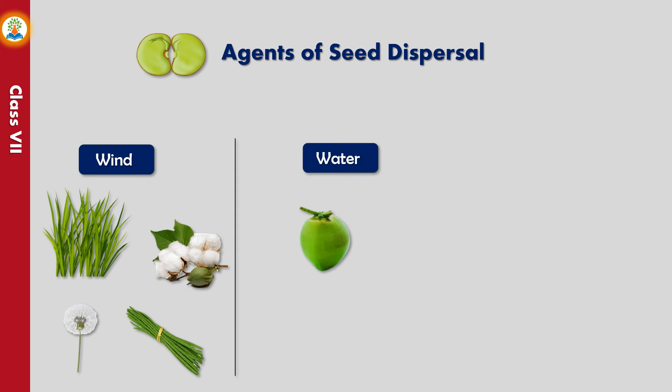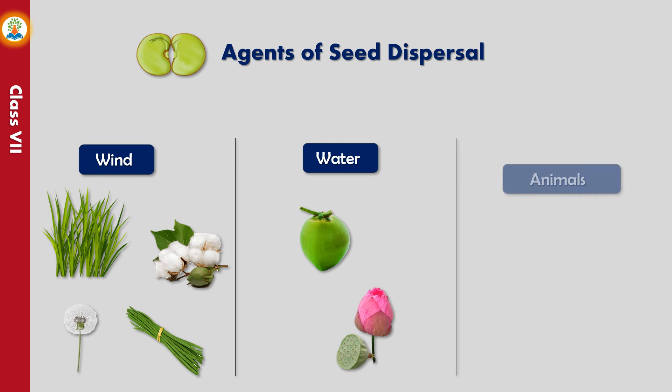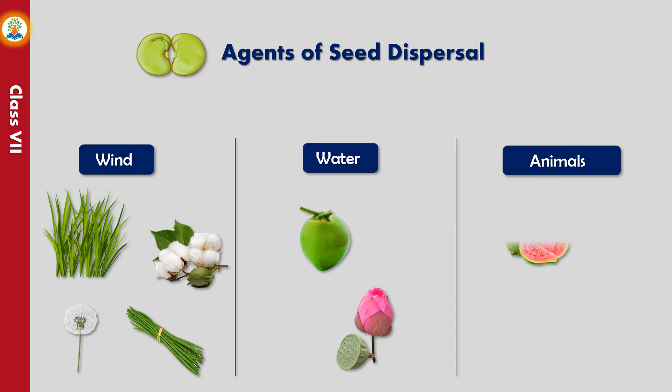The seeds of plants growing in or near water sources are dispersed with the help of water. For example, coconut has hair trapped between its fibers that help it to float and is dispersed by water. The lotus fruit is spongy and floats easily, and it is also dispersed by water.